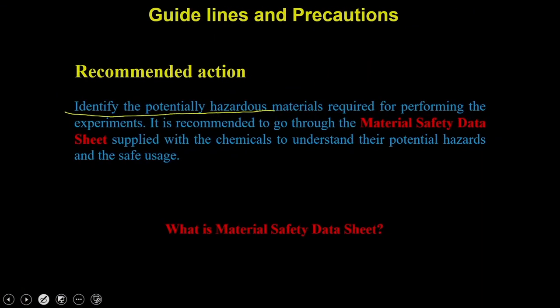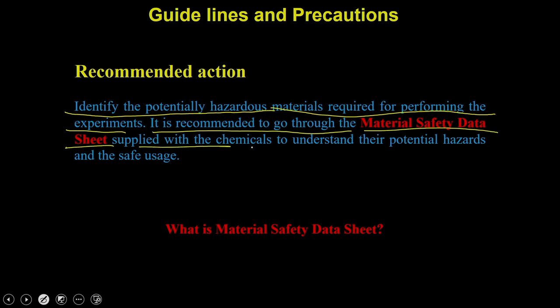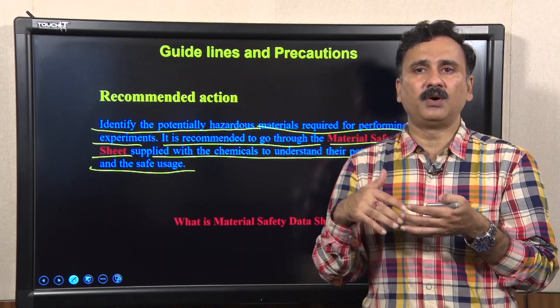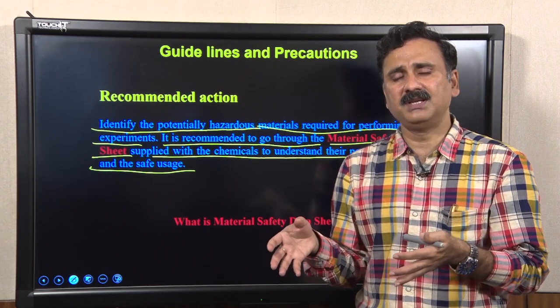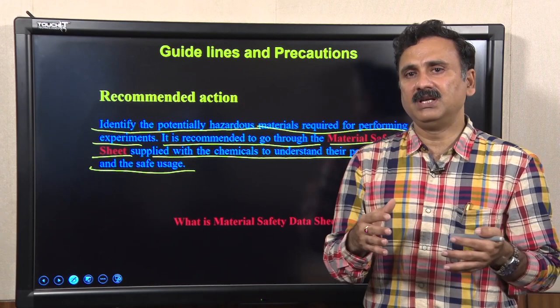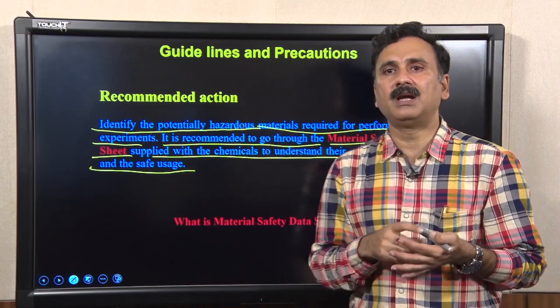Before you start the experiment, identify the potentially hazardous material required for performing the experiments. It is recommended to go through the material safety data sheet supplied with the chemical to understand its potential hazard and safe usage. Before you open the container, you need to know what chemicals are required and read the material safety data sheet.